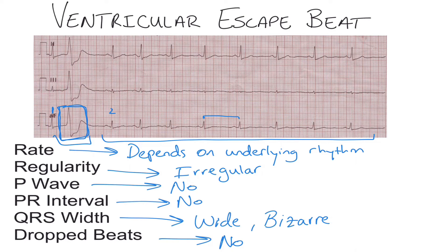With a ventricular escape beat, it is a non-compensatory pause, meaning the ventricles actually reset their timing cycle after the wide bizarre beat. If we measure the distance from QRS one to QRS two, it should be roughly nine to ten boxes away. However, when we march them out, we find they're just under eight boxes. So we can say with certainty this is a ventricular escape beat because we're seeing a non-compensatory pause. If we saw a compensatory pause, we would call this a PVC.